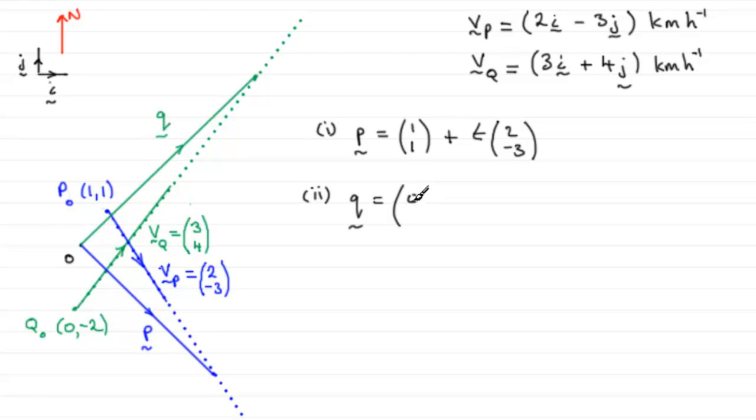So, you've got 0 minus 2 and then plus t amounts of the velocity vector for Q. The velocity vector was 3,4. So, t lots of 3,4.